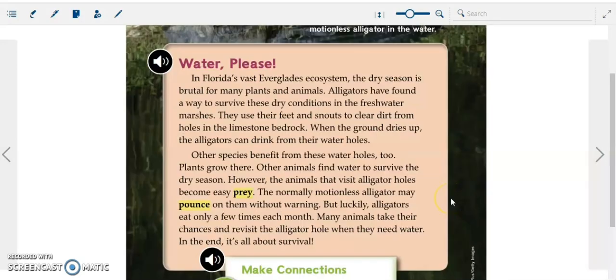Water, please. In Florida's vast Everglades ecosystem, the dry season is brutal for many plants and animals. Alligators have found a way to survive these dry conditions in the freshwater marshes. They use their feet and snouts to clear dirt from holes in the limestone bedrock. When the ground dries up, the alligators can drink from their water holes.